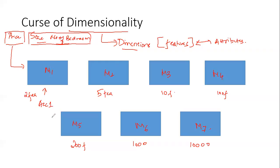In my next model M2, I give the same dataset but instead of two independent features I consider five. These may include things like state, bedroom size, and other additional features. When I train M2 with five features, it gives better accuracy than M1, because the model has more information to learn from. So ACC1 is less than ACC2.